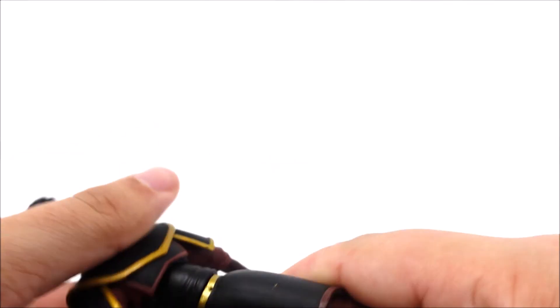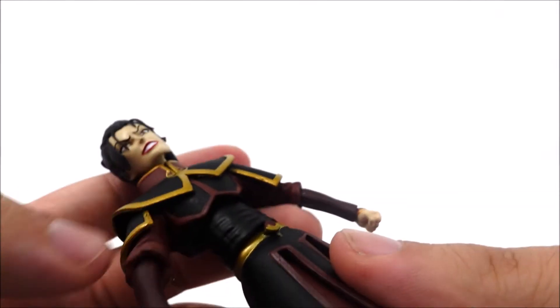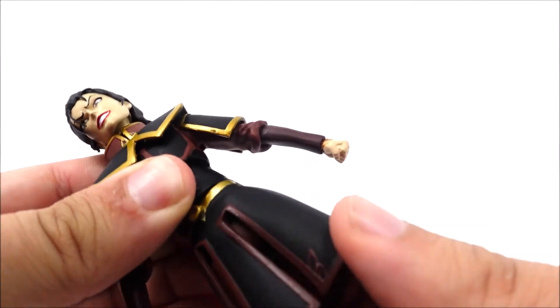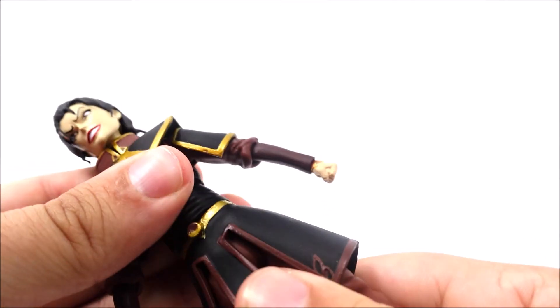So we got full rotation of the waist, and then also on the hips you got full rotation of the hips, but no ab crunch.